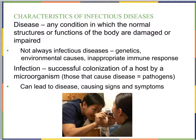Not everything is an infectious disease. We have genetic diseases that are passed down, environmental causes for particular diseases, and things like an inappropriate immune response — something similar to allergies, where the body's response to a small hapten is overwhelming, causing allergic reactions.